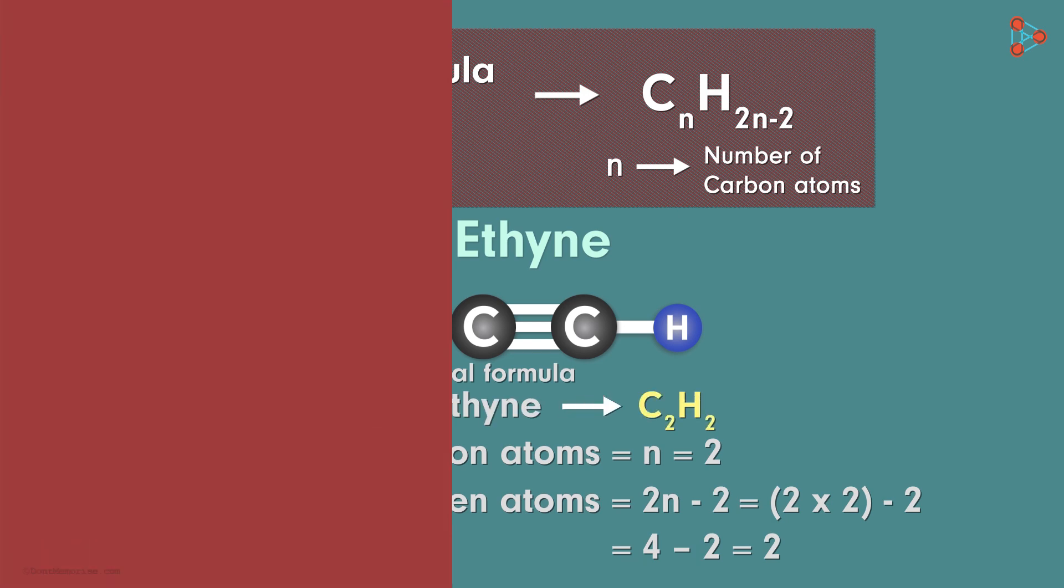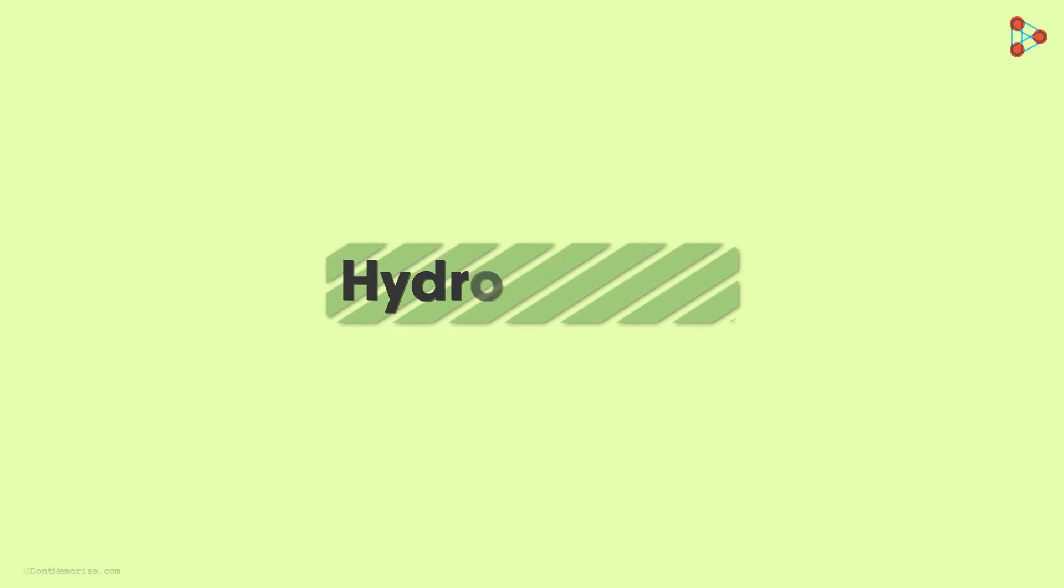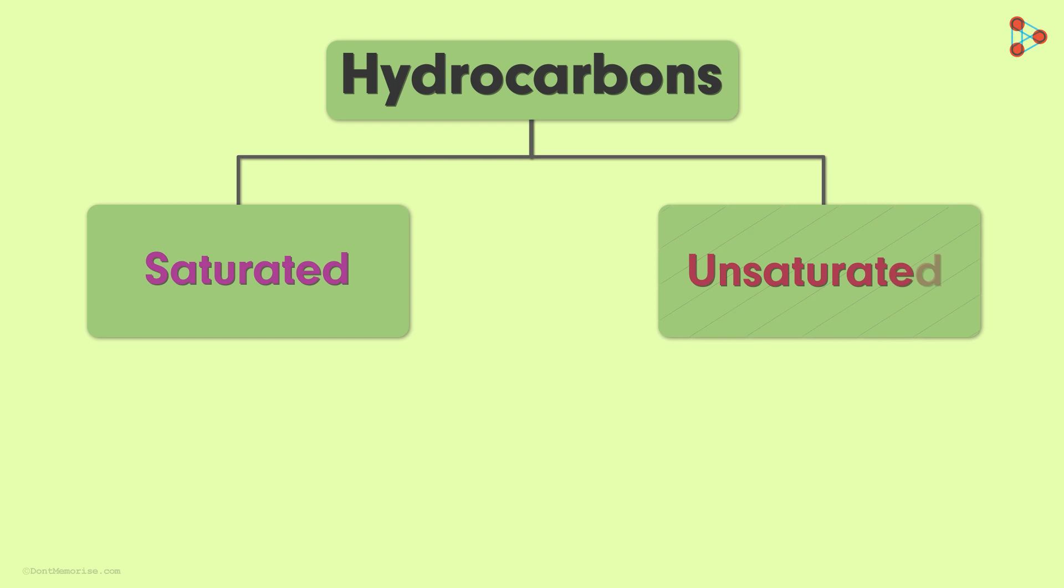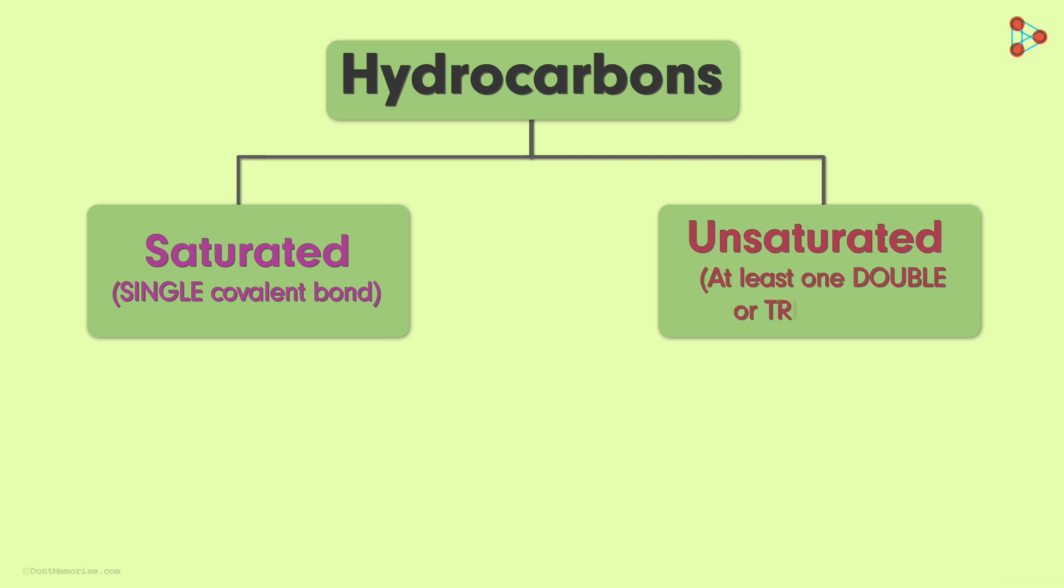Let's quickly review what we learned. Hydrocarbons are classified into two categories: saturated and unsaturated. Saturated hydrocarbons have single covalent bonds between carbon atoms, while unsaturated ones have at least one double or triple covalent bond between carbon atoms.